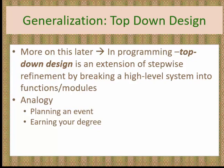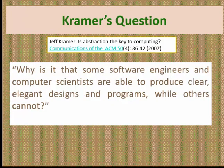Generalization can help us improve our programs with the concept of top-down design, which is an extension of stepwise refinement but at a higher-level system view — creating functions and modules. The ability to generalize is so key, and generalization is a part of abstraction. So why is it that some software engineers and computer scientists are able to produce clear and elegant designs while others cannot? The answer is abstraction. Abstraction is the key to computing.